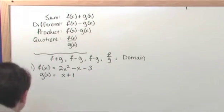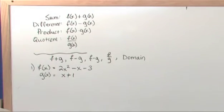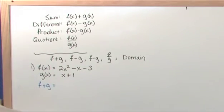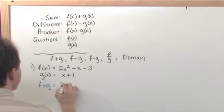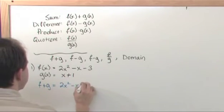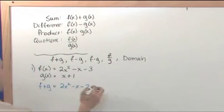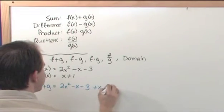Let me switch colors a little bit here just to mix it up. So f plus g is just going to be equal to exactly what you think here. You just add them together. There's nothing magical about it. So you have 2x squared minus x minus 3. That's this function. And we're going to add to it x plus 1. Plus x plus 1.